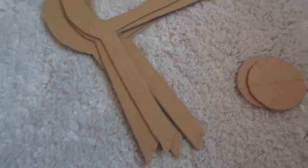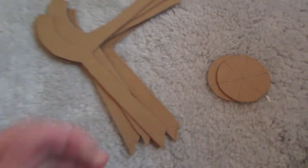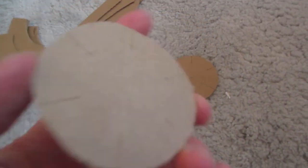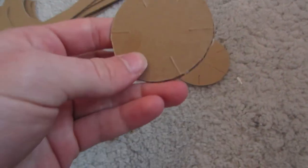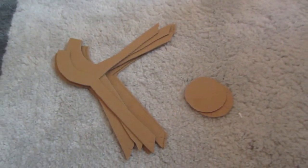All right, so as you can see what I've done is cut little slots in the edges of all of these pieces and then I've cut little slots in the circular pieces. So I'm going to do now is try and connect everything together and get the chandelier assembled.